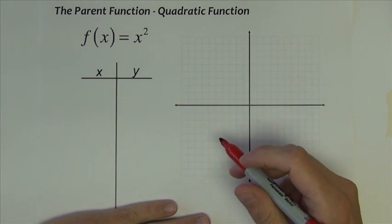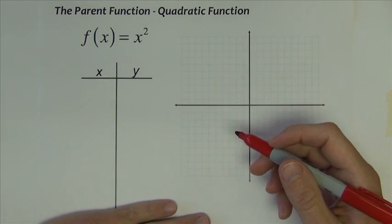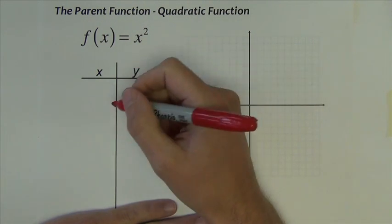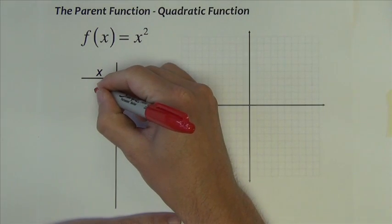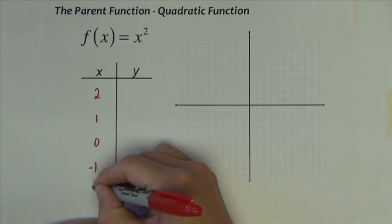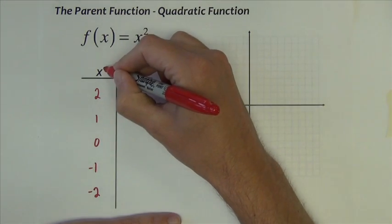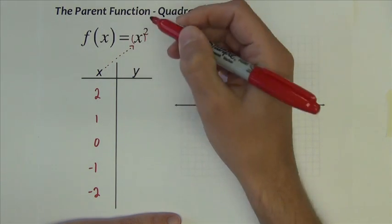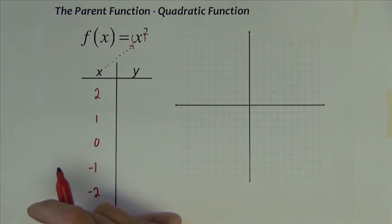The quadratic parent function, meaning the most basic simple quadratic function we have, is f(x) = x². Let's make a table of values that go 2, 1, 0, negative 1, and negative 2. We're taking these x numbers, plugging them in for x, and squaring them.